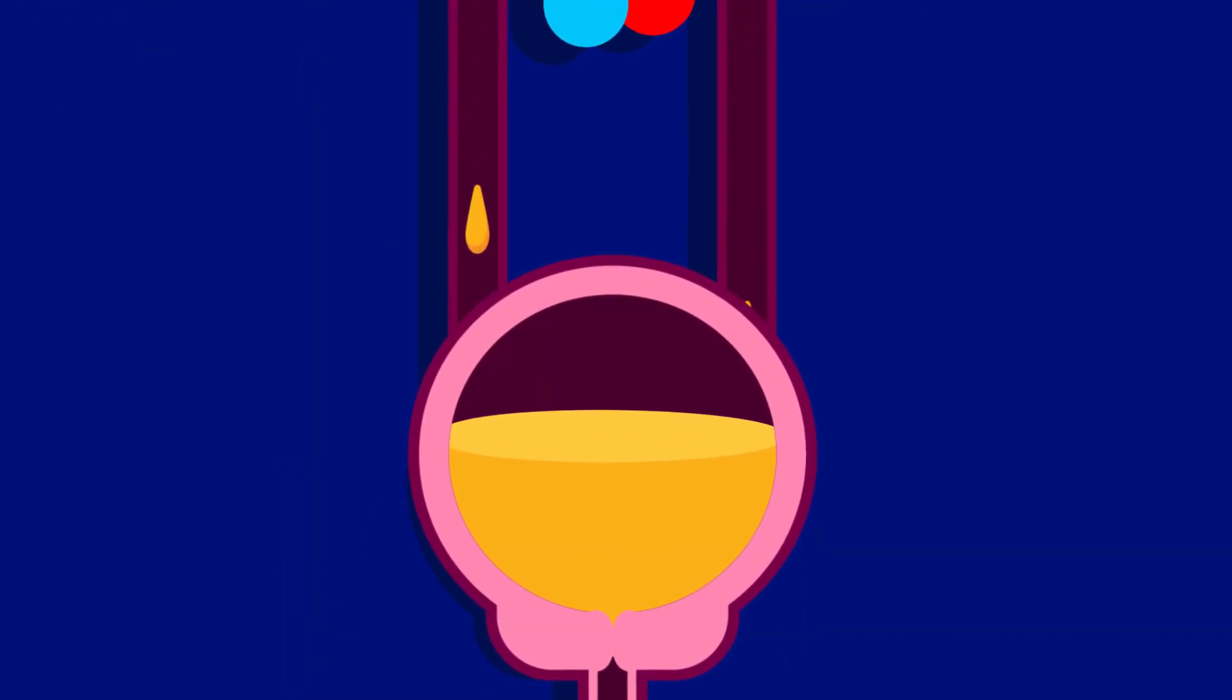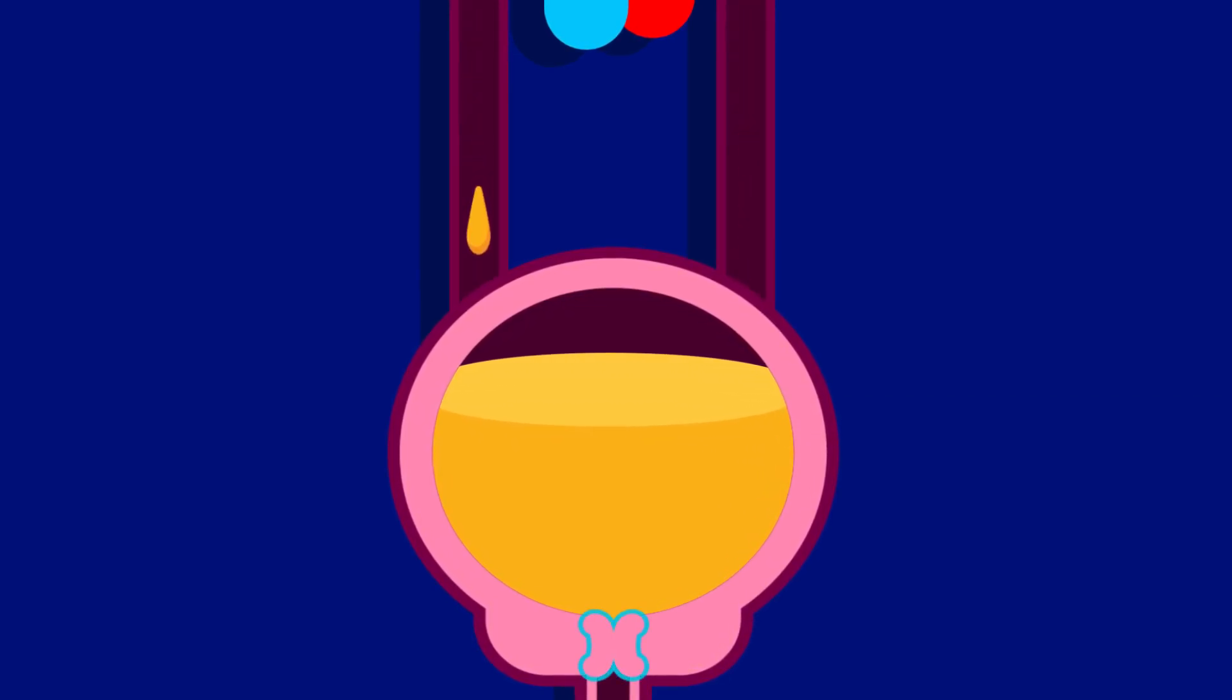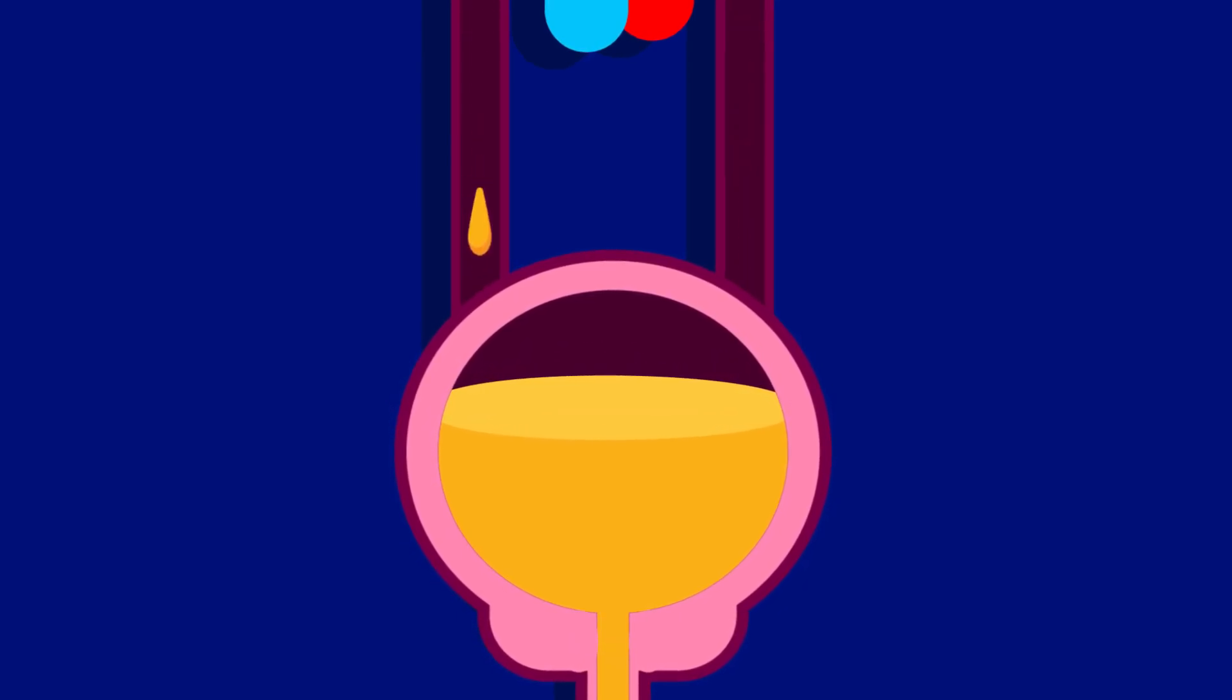Inside the urinary bladder, which is the muscular bag that acts as a temporary storage, the urine is held for later discharge. The sphincter muscle controls the flow of urine and relaxes to release urine in the bladder. The urethra carries urine out of the body.